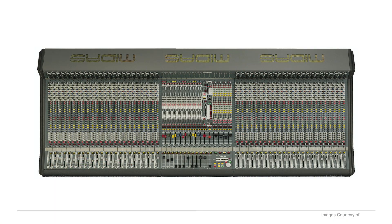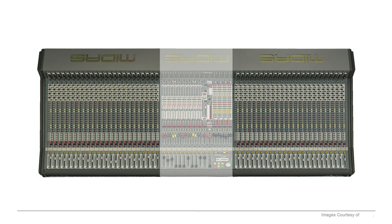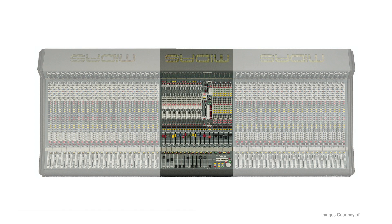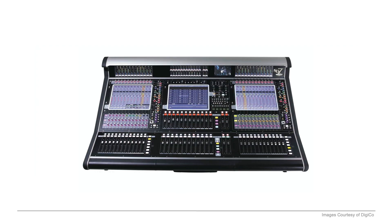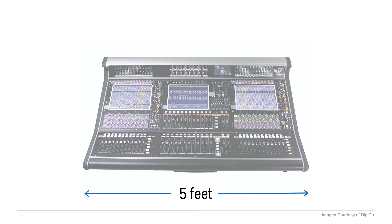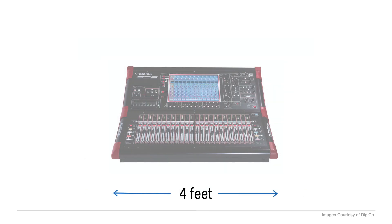This Midas XL4 has 48 channel strips, along with an output section in the middle of the console, which is great, but it comes in at about 7 feet across. And when we look at equivalent digital consoles, even flagship models like this Digico SD7, they usually only come in about 5 feet, while the even more compact SD9 comes in at less than 4 feet.